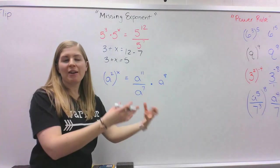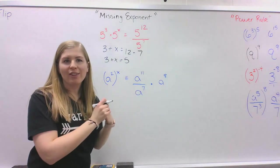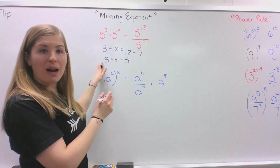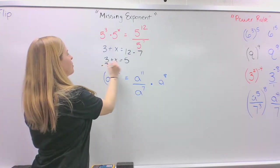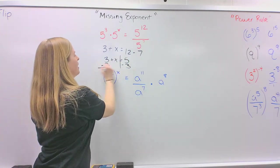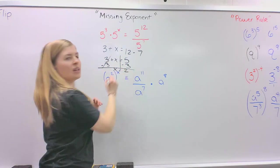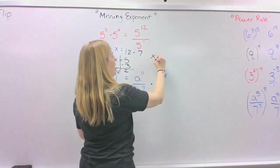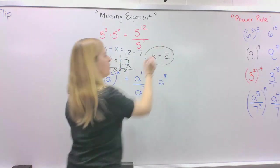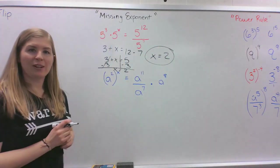We want the variable on one side and the answer or the number on the other side. So this is positive, so we're going to subtract 3 from both sides. Those cancel out. We'll be left with x equals 5 minus 3 is 2. So x equals 2. 2 is our missing exponent here.